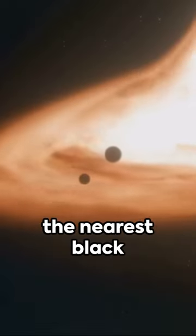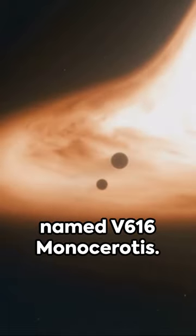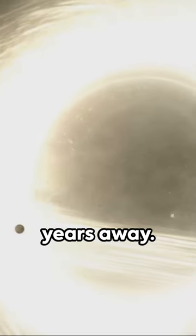Believe it or not, the nearest black hole to Earth is named V616 Monocerotis. It's located a safe 3,000 light years away.